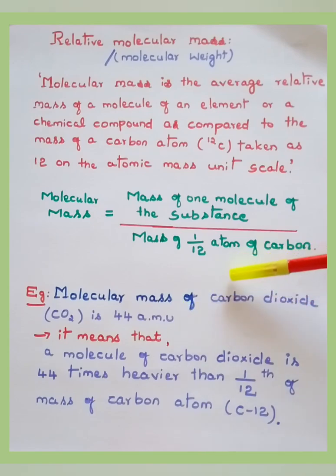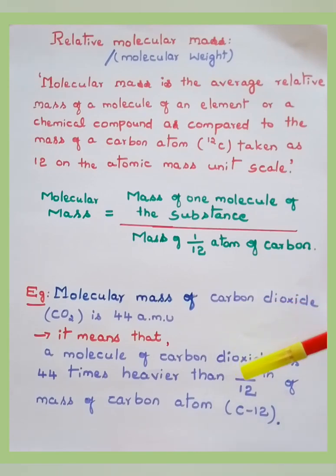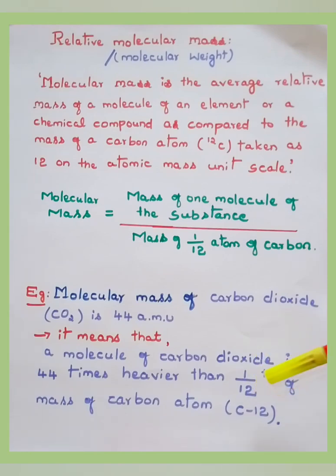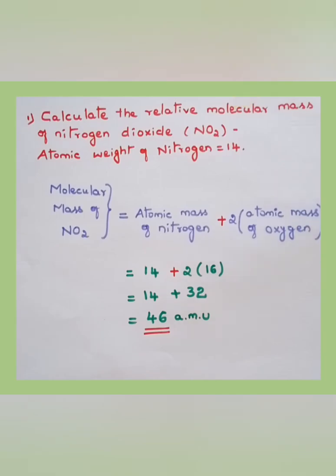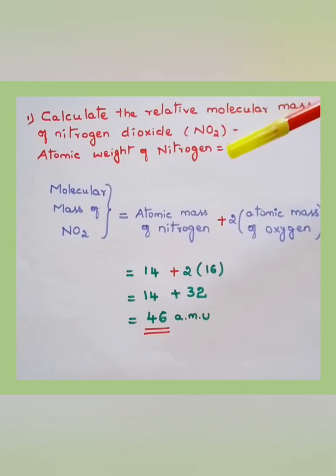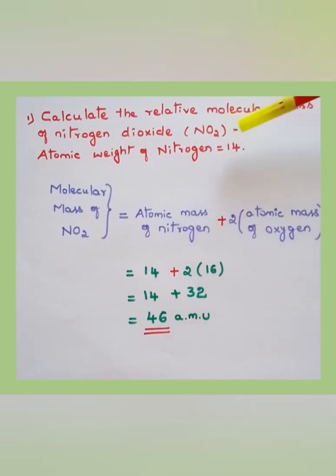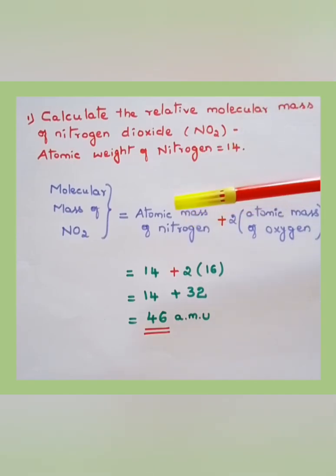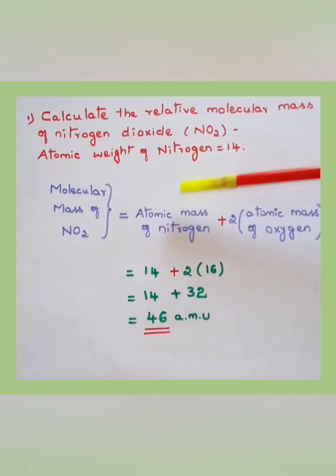Whenever we find the molecular mass of a given element or compound, we are comparing it with 1/12 of the mass of the carbon atom. Now let us learn how to calculate the relative molecular mass in numericals. This first numerical is from the 2022 GPST exam model question paper: Calculate the relative molecular mass of nitrogen dioxide, NO₂. The atomic weight of nitrogen is given as 14.